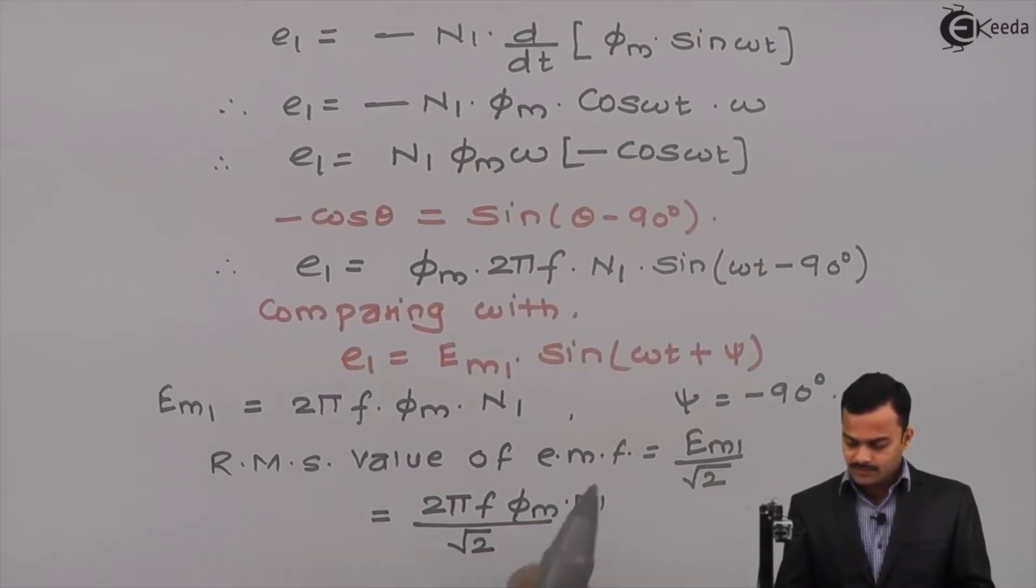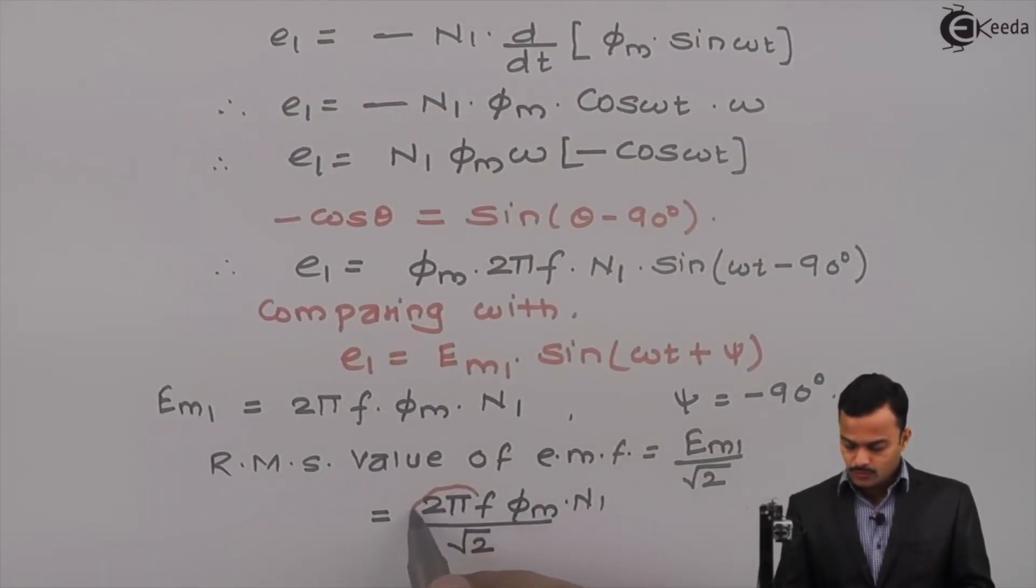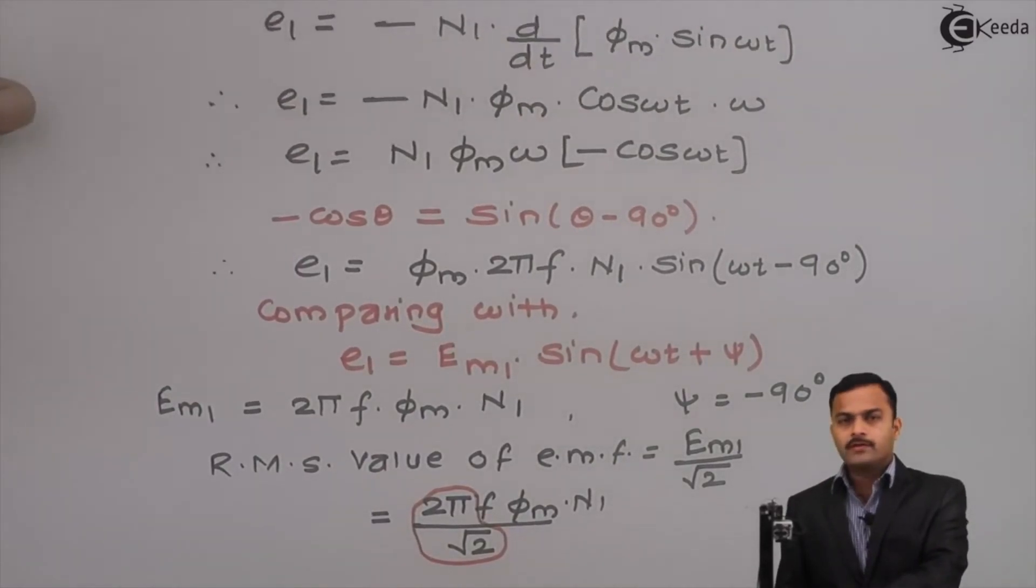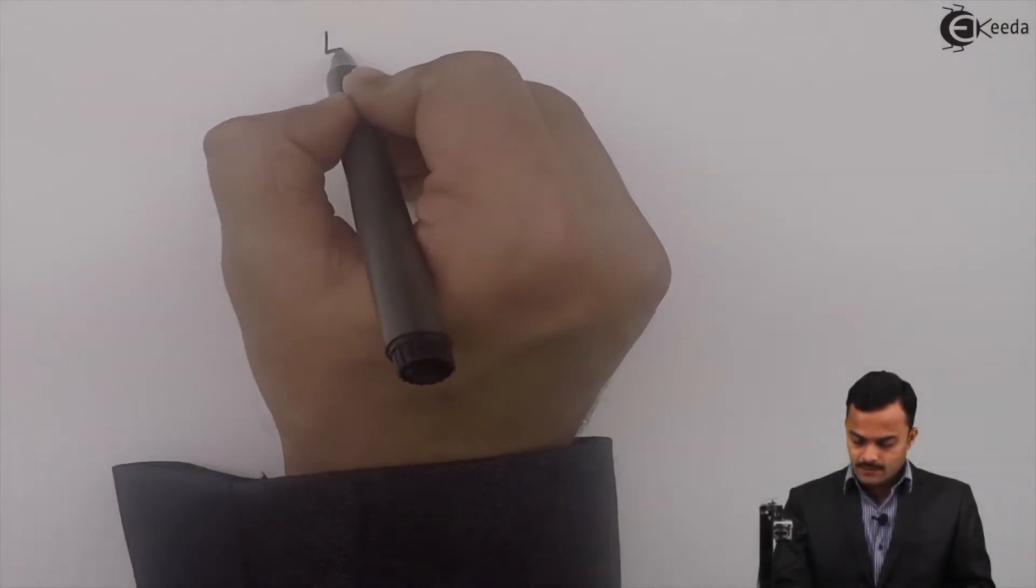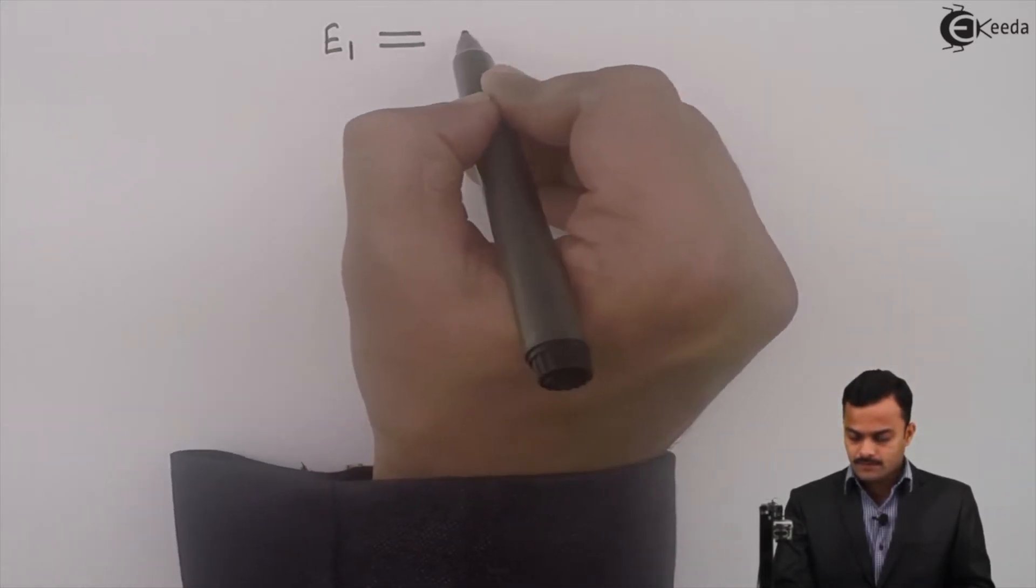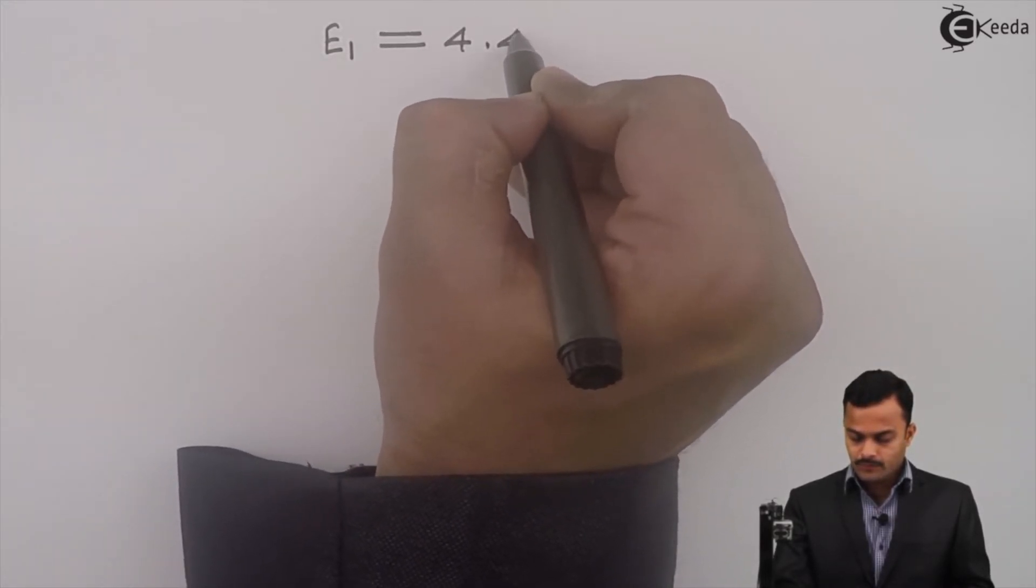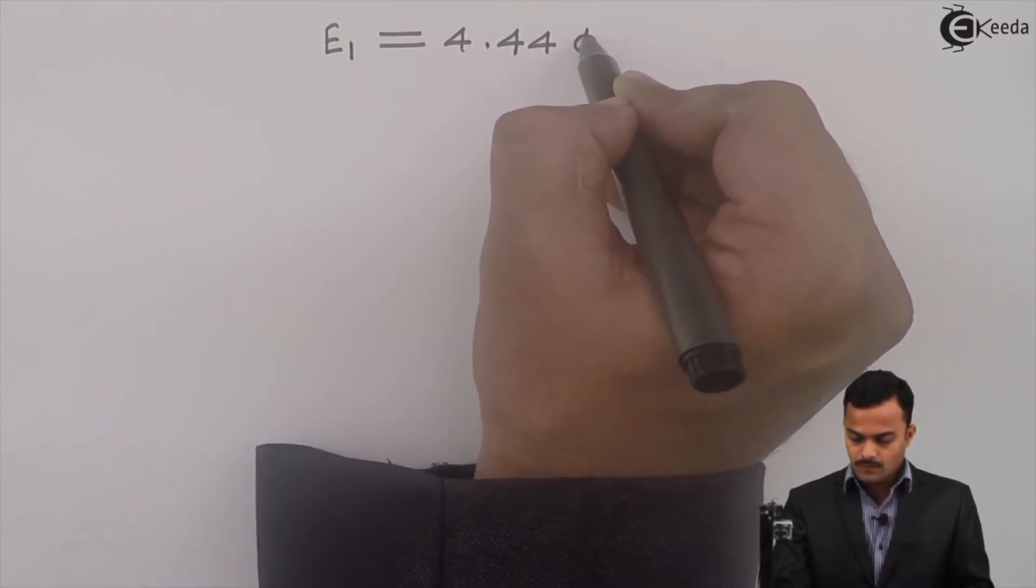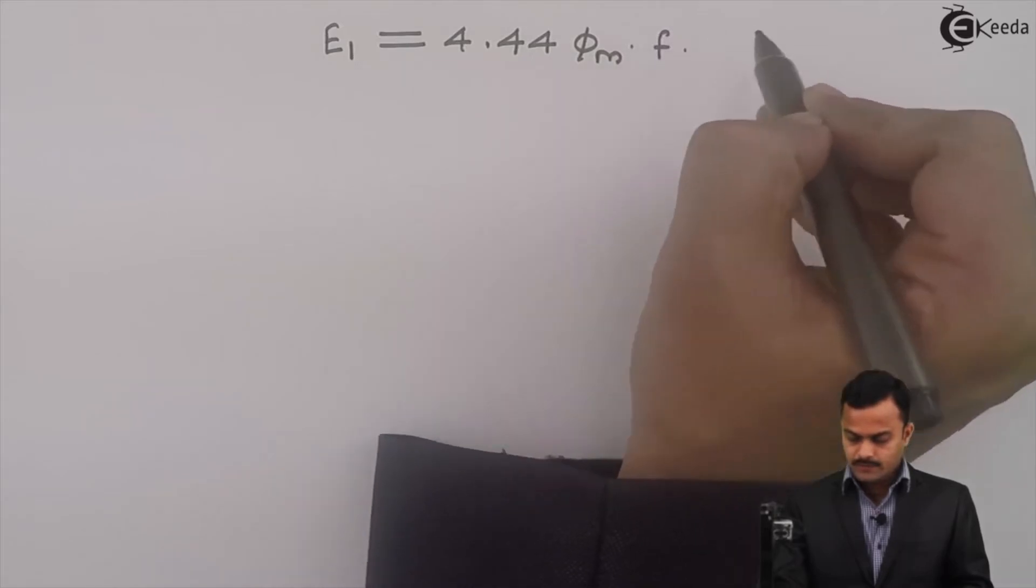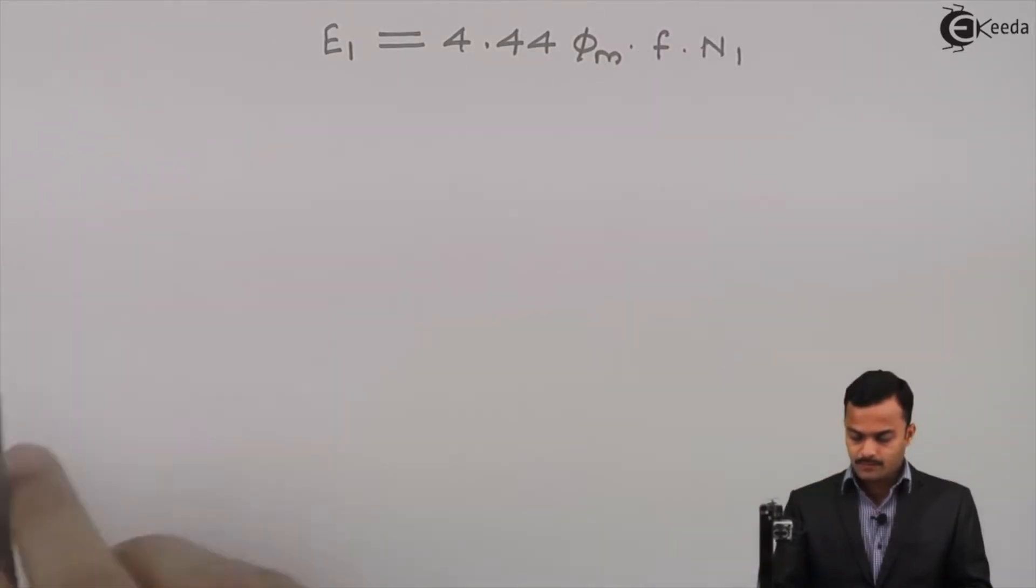If you see carefully, this 2 pi by root 2 is a constant. If you solve that will be 4.44. Finally, what I can say: primary EMF induced RMS value is 4.44 phi m into frequency into number of primary turns.